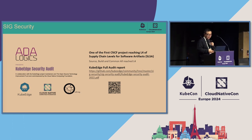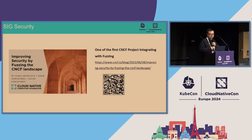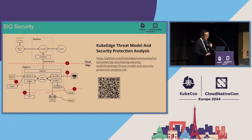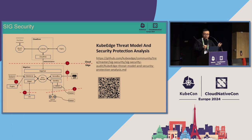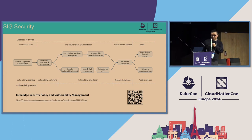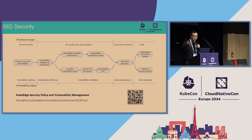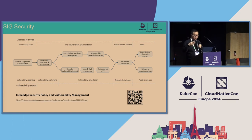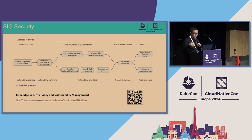Next is security. We have completed an audit review and published an audit report. KubeEdge is also one of the first CNCF projects integrated with fuzzing tests, and we have a fuzzing test report. We have also completed a threat model and security protection analysis. When users report a bug or CVE, our security team addresses it, releases a patch to restricted disclosure vendors, and then makes it public.